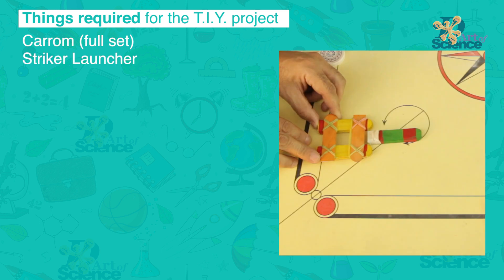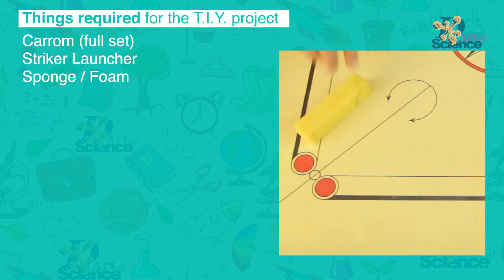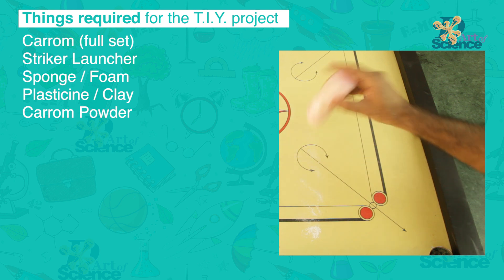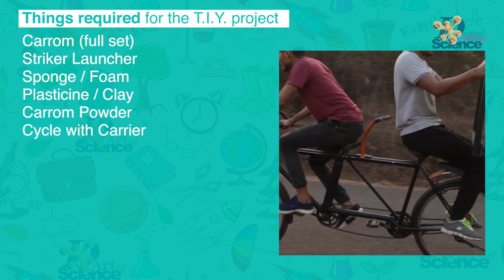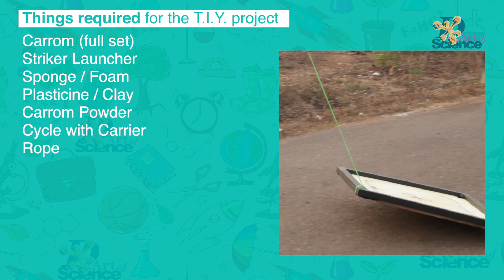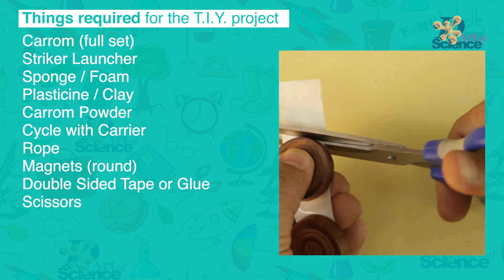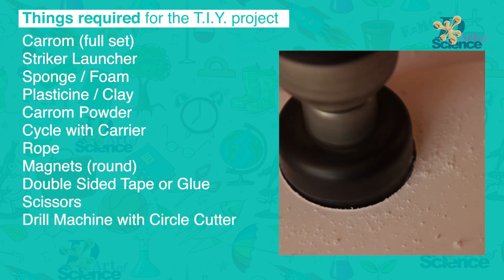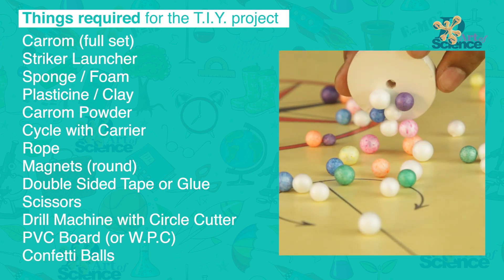Things required for the DIY project: full set of carom, striker, launcher, sponge or foam, plasticine or clay, carom powder, cycle with carrier, rope, round magnets, double sided tape or glue, scissors, drill machine with circle cutter, PVC board or WPC, and confetti balls.